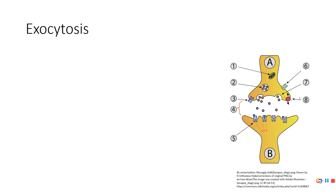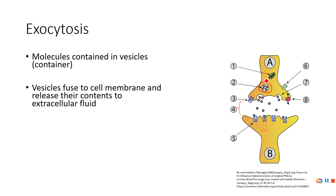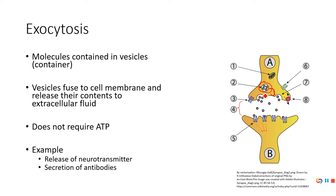Next is exocytosis, which we'll cover in more detail on Thursday of week two. Exocytosis is when molecules contained in a vesicle — a fancy name for a container — are released. The vesicle moves to the surface of the cell membrane and releases its contents. This does not require ATP; it happens naturally once a signal is received. We'll specifically talk about this when discussing neurotransmitter release.